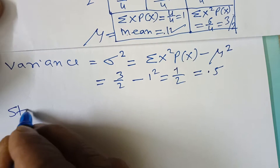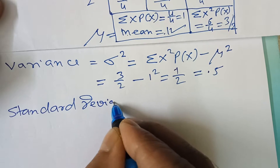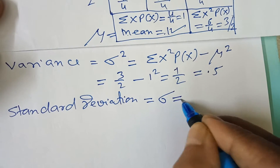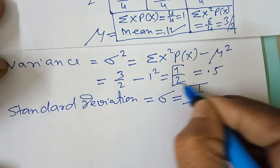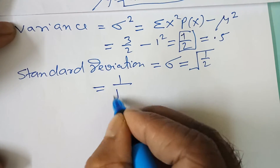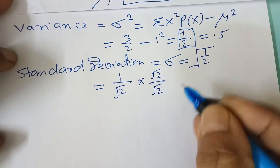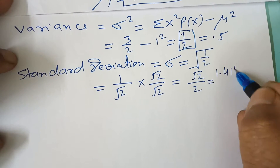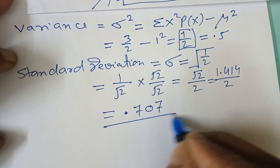Standard deviation is the square root of variance, denoted by sigma. Its value here is sqrt(1/2) = 1/sqrt(2). Rationalizing by multiplying numerator and denominator by sqrt(2) gives sqrt(2)/2 = 1.414/2 ≈ 0.707. This is the answer.